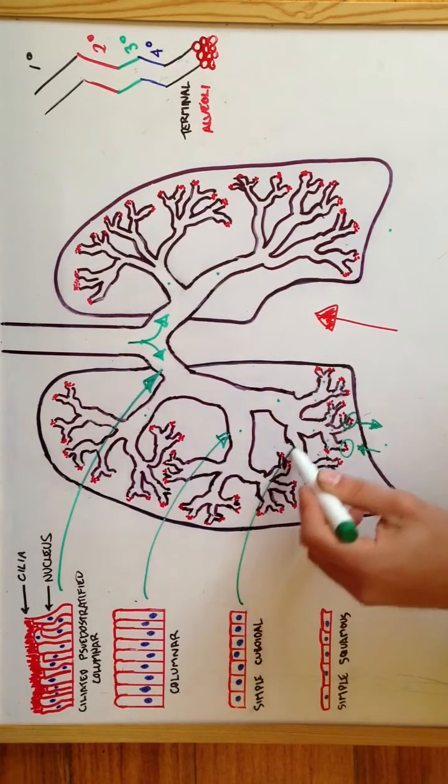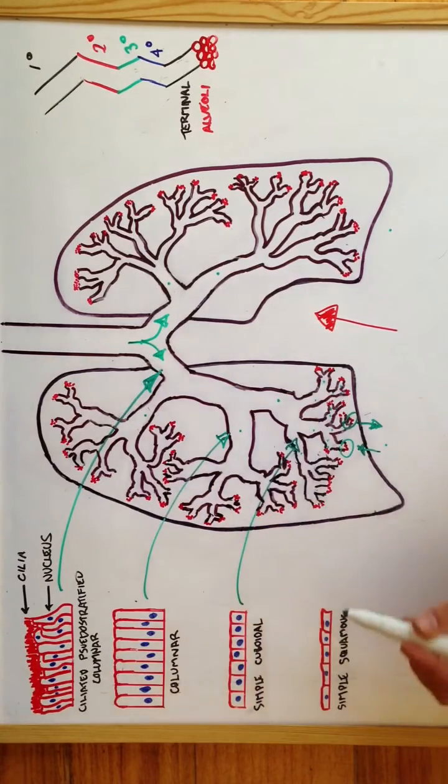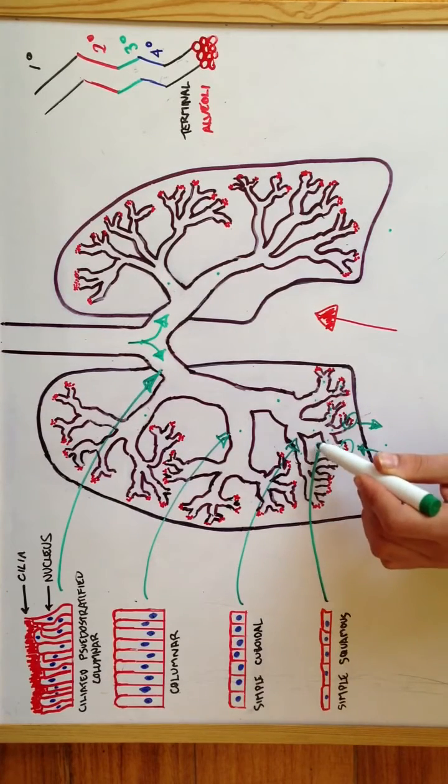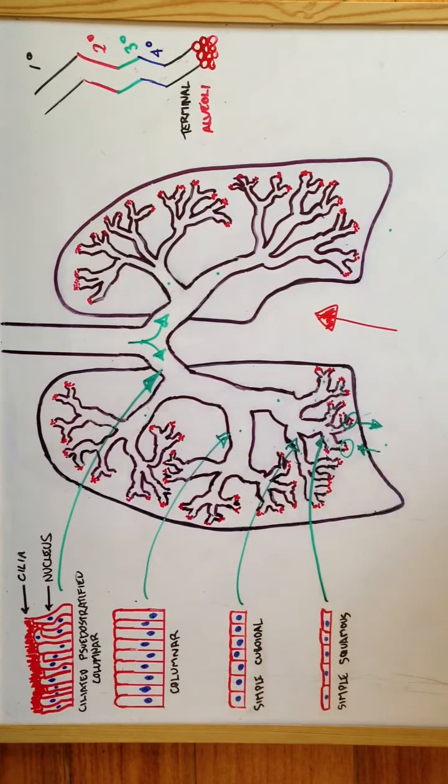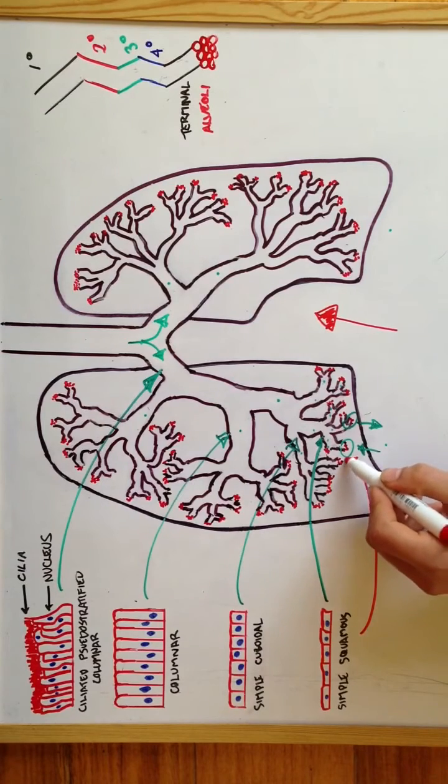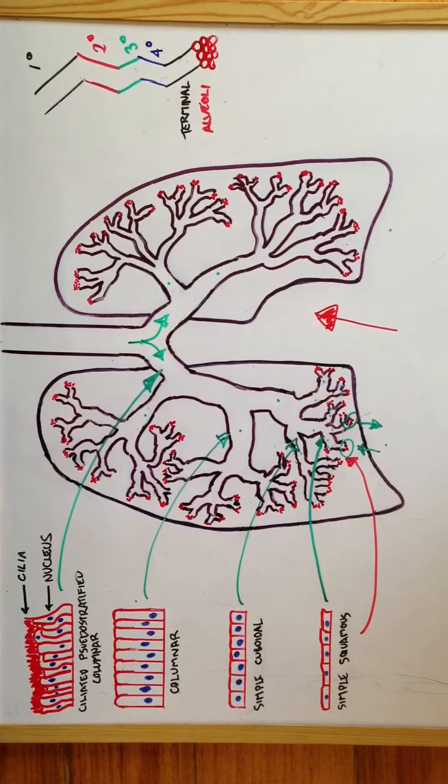Simple cuboidal in the tertiary bronchi, simple squamous in the bronchioles, or quaternary bronchioles, and terminal bronchioles. The alveoli and alveolar ducts also consist primarily of simple squamous to allow for diffusion of oxygen and carbon dioxide gases. Oxygenation of the blood from the lungs occurs across the walls of the alveolar ducts and alveoli.